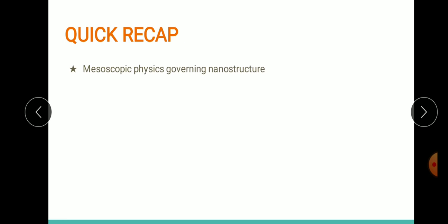Before we start the module, let's have a quick recap of what we have learned so far. We have completed four modules. In those modules we began with mesoscopic physics governing nanostructures — we saw the quantum nature of nanostructures, the de Broglie wavelength, various characteristic lengths, and the Schrödinger equations.